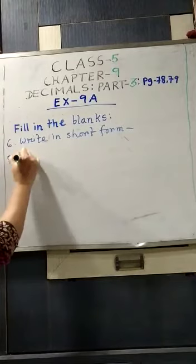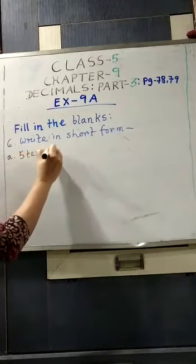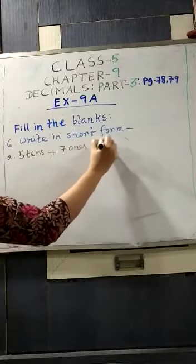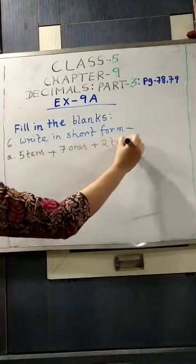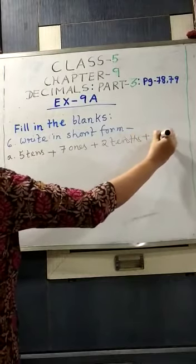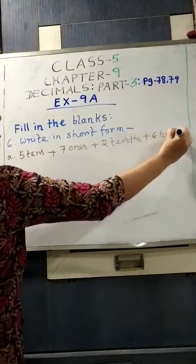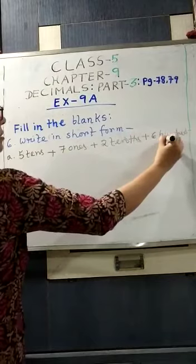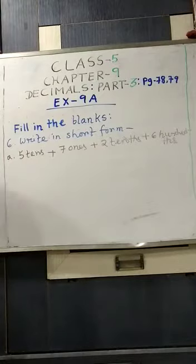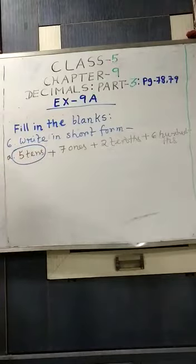5 tens plus 7 ones plus 2 tenths plus 6 hundredths. Now we will have to write down in short form. So 5 tens, what does 5 tens mean? 50.